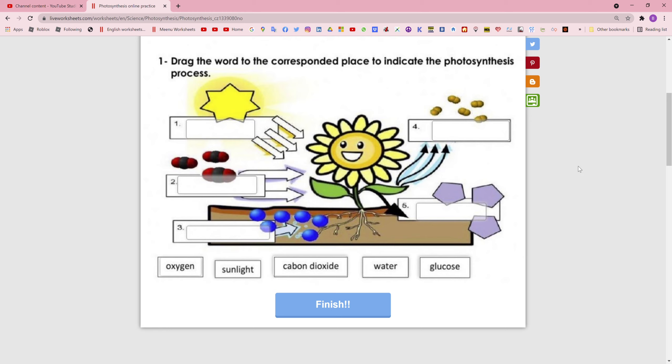First, it absorbs sunlight. We're going to get that. Come here. This is a drag and drop worksheet. Okay, this is carbon dioxide.